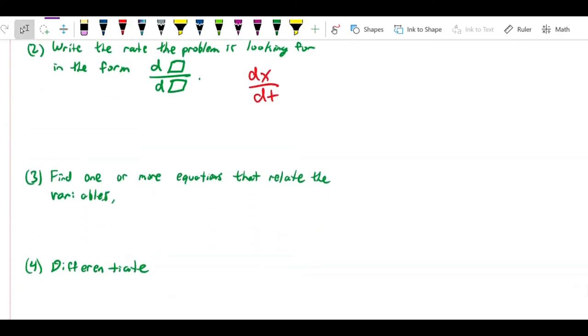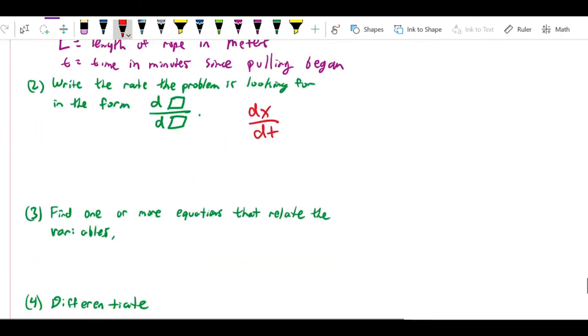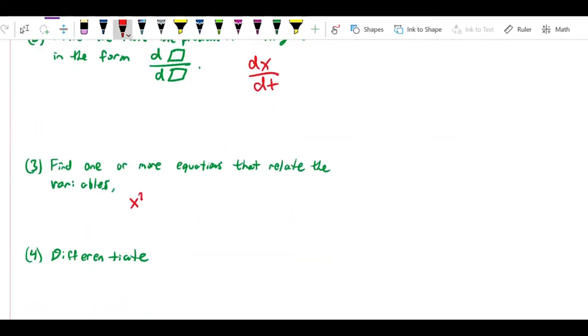Now, we need to find equations that relate the variables. Like I said, triangles are very common here. This is a right triangle. L is the hypotenuse. We can just read right off this triangle that x squared plus 5 squared is equal to L squared. 5 squared is 25. So the equation is x squared plus 25 equals L squared.